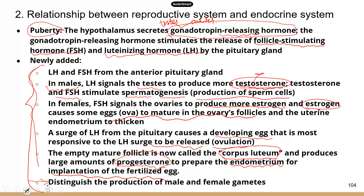The last topic is about the difference in the production of male and female gametes. Male gametes are sperm cells, and female gametes are eggs. Sperm cells are produced constantly — a male can produce sperm every day. But for females, an egg and sometimes multiple eggs are only released once a month — it's not continuous. Another difference is the locations where they're produced: testes for males and ovaries for females.